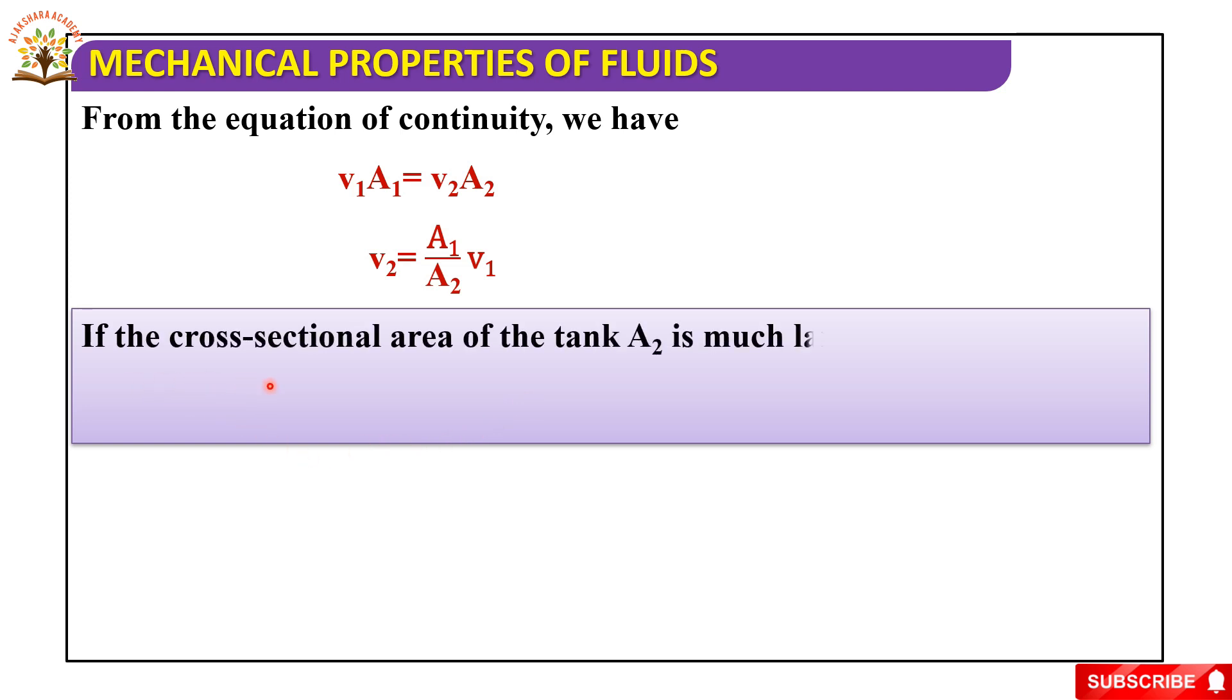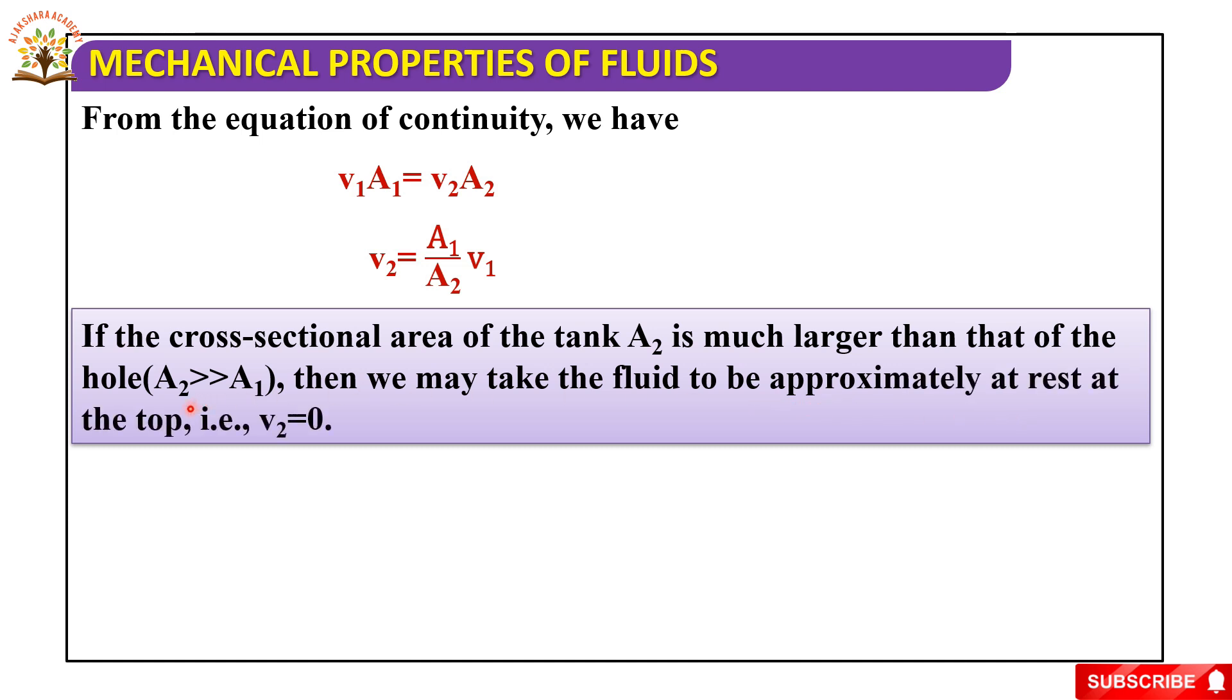So, if the cross sectional area of the tank A2 is much larger than that of the hole, then we may take the fluid to be approximately at rest at the top. So that is, v2 equals 0. The condition is A2 is much greater than A1.